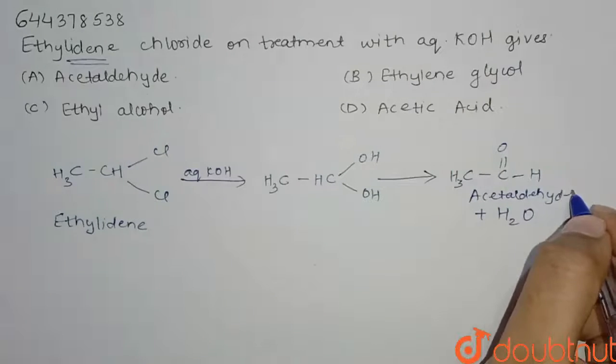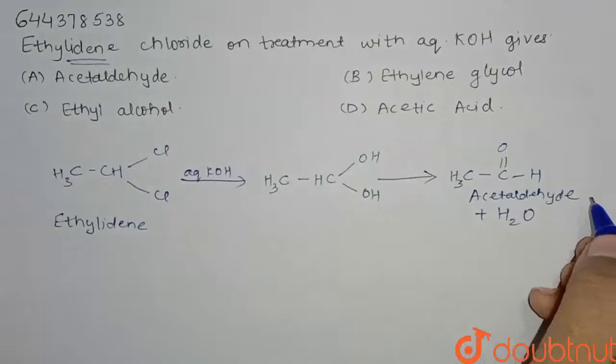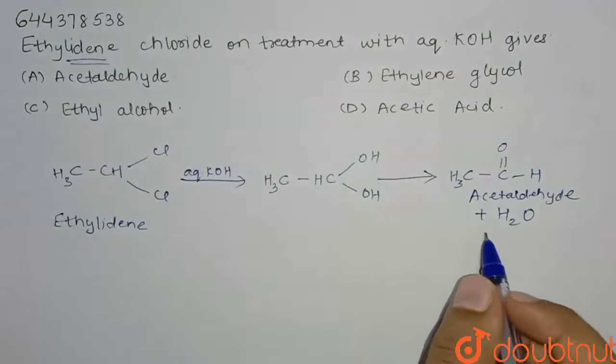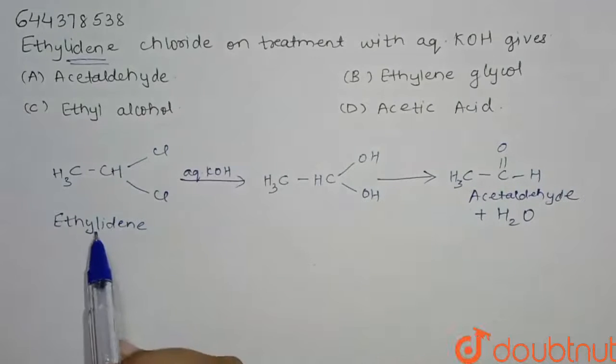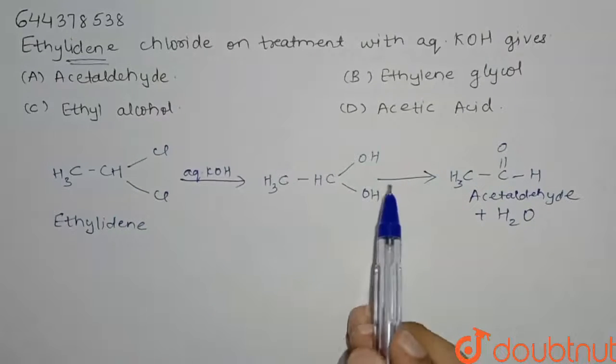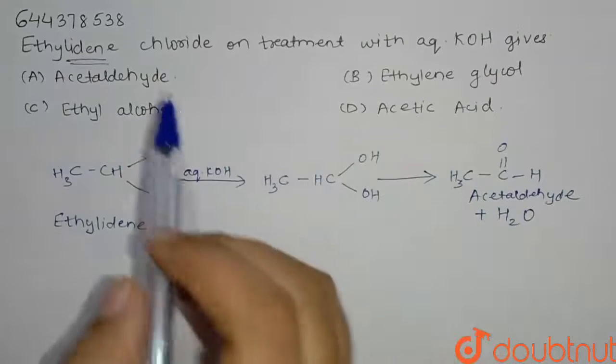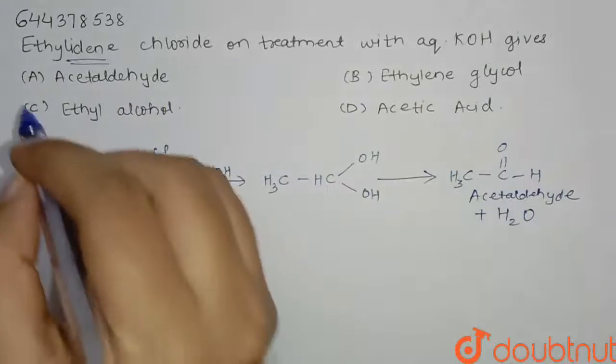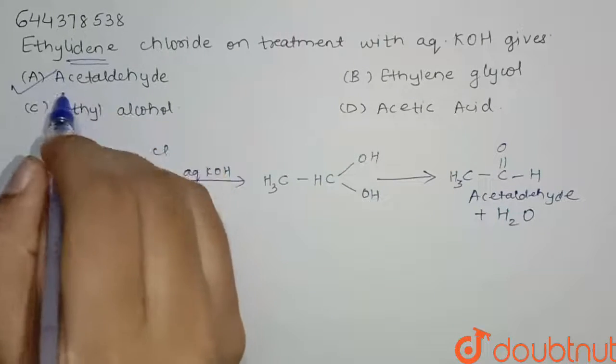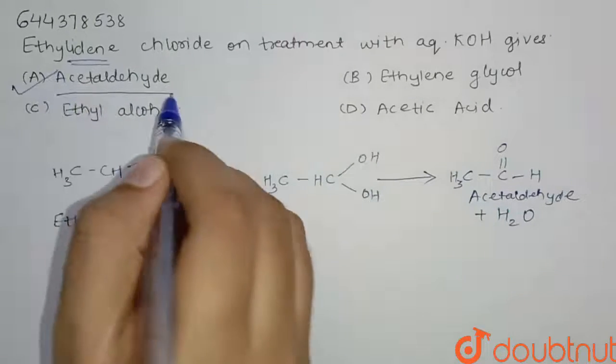So ethylidene dichloride on treatment with aqueous KOH gives acetaldehyde. Our answer here is option A, that is acetaldehyde.